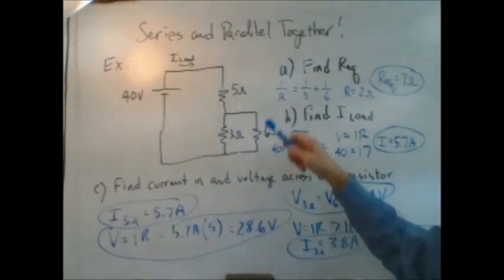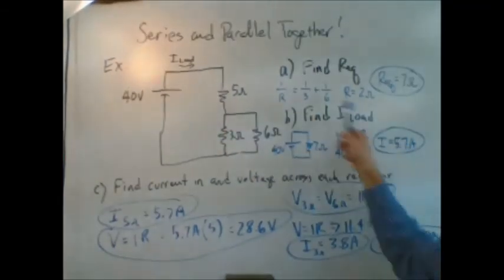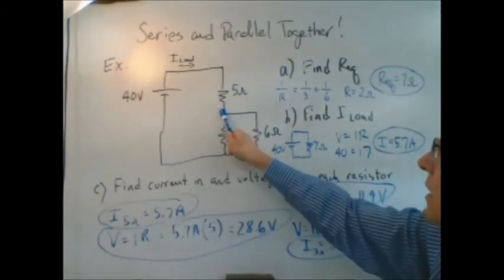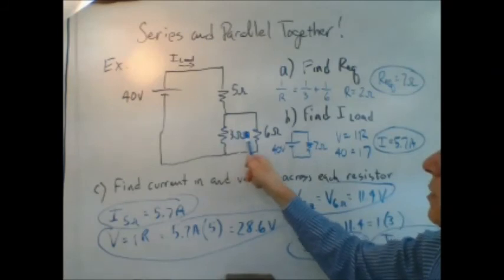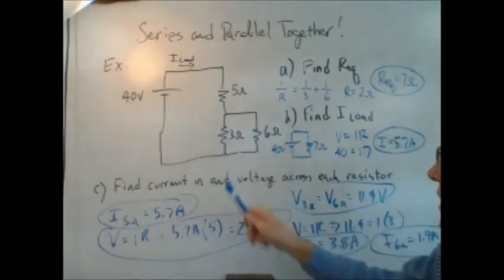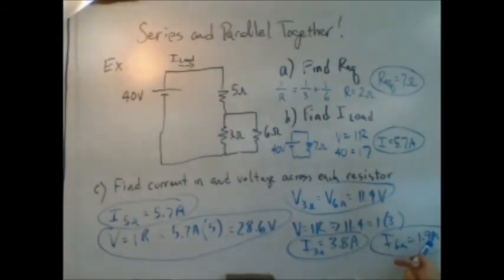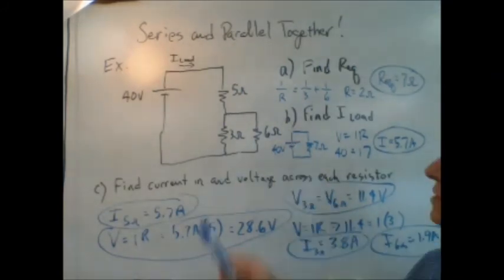So you can see that if 5.7 amps is coming out of here, then these two have to add up to 5.7 amps, and they do. 3.8 and 1.9 is 5.7. And so the conservation of charge holds there as we would expect it to.